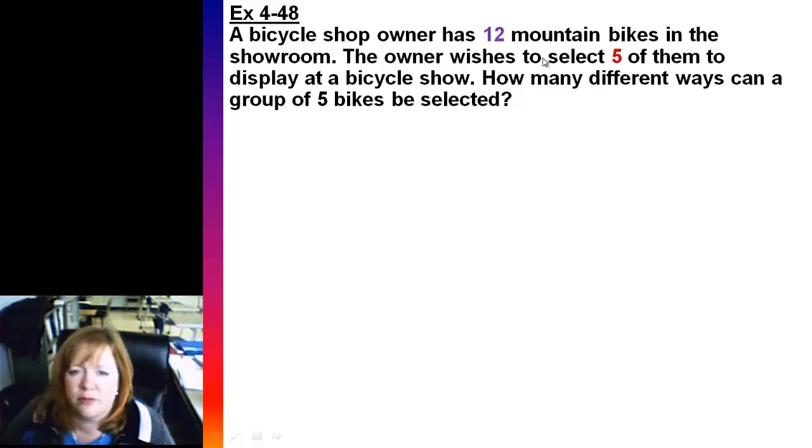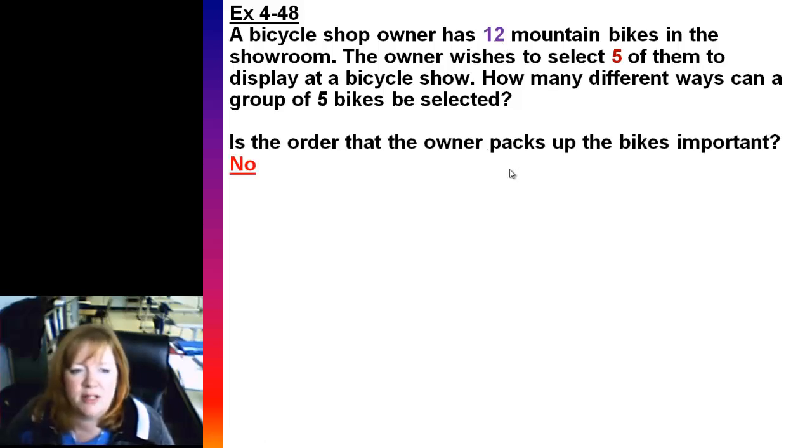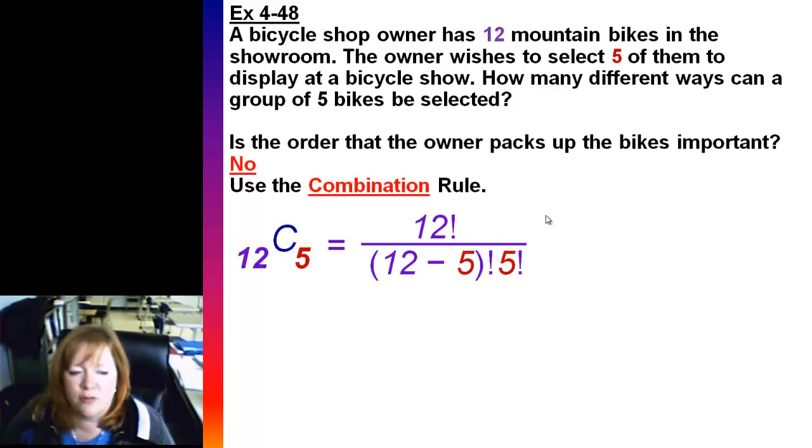Bicycle shop owner is choosing five out of twelve bikes to display. And order is not important because he's just putting them on a display. So we're going to use the combination rule. Twelve choose five if we do that out on our calculator. And notice if you write this out, seven and five on the bottom add up to twelve. Just another fun fact. So you end up with a grand total of 792.